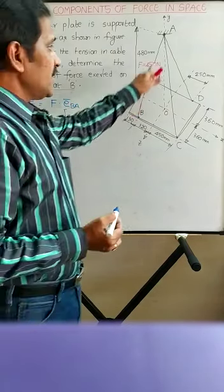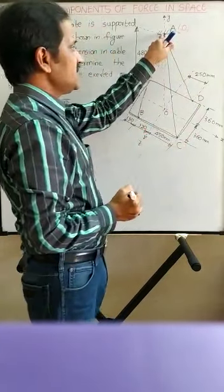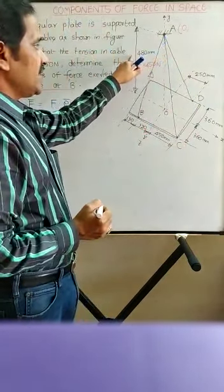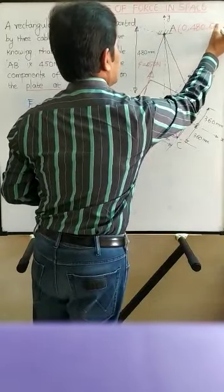Let us write first the coordinates of points A and B with respect to the origin. The dimension lines in the figure are parallel to either the X, Y, or Z axis. To write the coordinates of point A — point A is on the Y axis, so the other two components, X and Z, are 0. See the dimension line parallel to the Y axis: that is 480 millimeters. So the Y coordinate is plus 480 and the Z coordinate is 0.